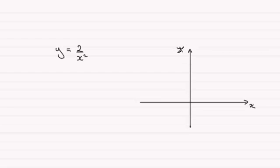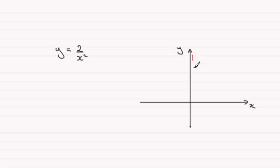Now when x tends towards 0, we're going to have 2 divided by a very small number, which is going to be a very large positive number. So when x tends towards 0 we're going to get the graph tending towards the y-axis like so.